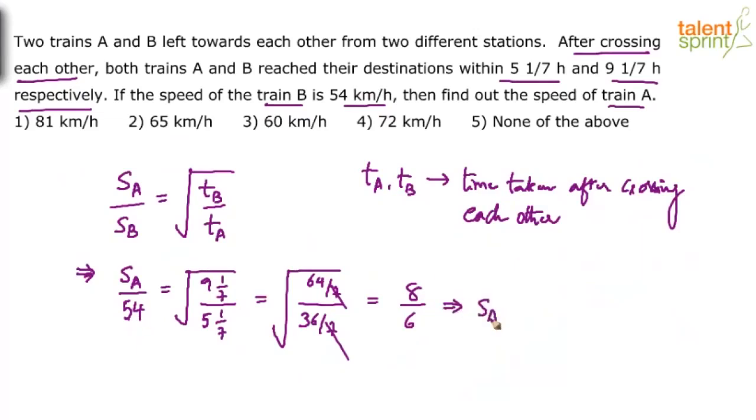So what should be the speed of train A? 8/6 into 54. So this goes 9 times, 9 times 8 is 72 kilometers per hour.